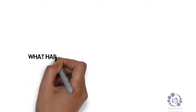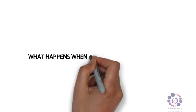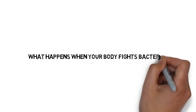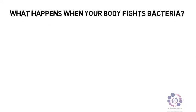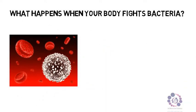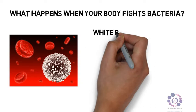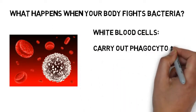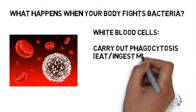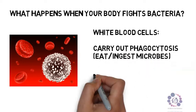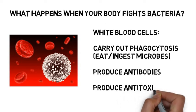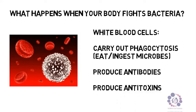Question: what happens when your body fights bacteria? There are three ways your body will respond by the white blood cells. White blood cells can either carry out phagocytosis, where they eat or ingest microbes. The white blood cells can produce antibodies, or the white blood cells can produce antitoxins to neutralise any toxins released by the bacteria.